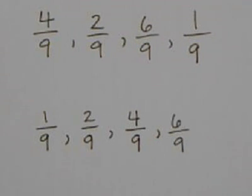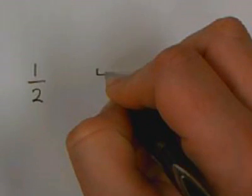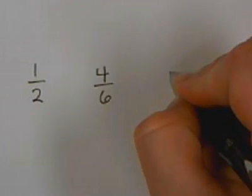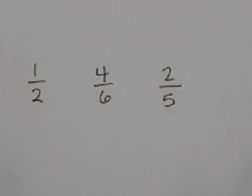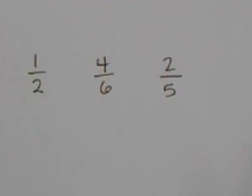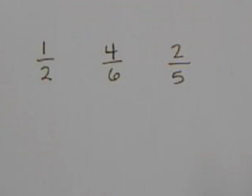Now it gets a little trickier when the denominators are not the same throughout. For example, if I have 1 half, 4 sixths, and 2 fifths, my denominators are not the same, so what I need to do is make them the same — quite similar to what we do when we add or subtract fractions with unlike denominators. We are going to list our multiples for each denominator, find the least common multiple or least common denominator, and then fill in our numerators.